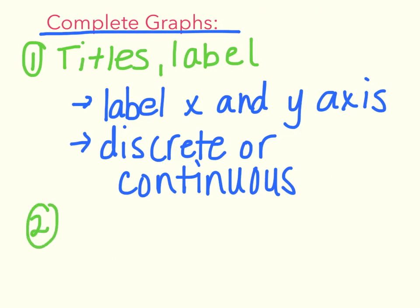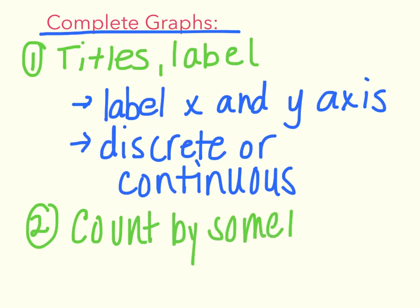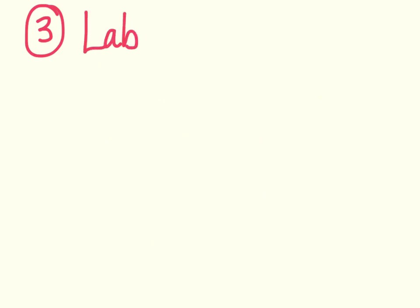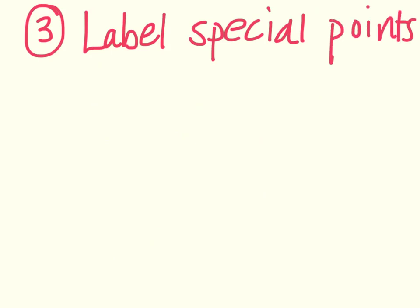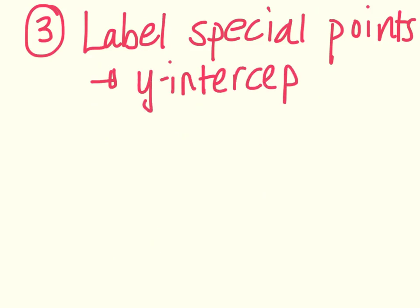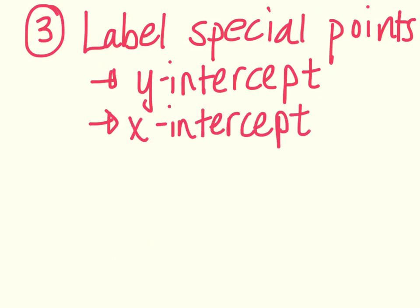Second, you need to make sure you count by something and label it on your graph. Whether you're counting by ones, twos, or tens, please make sure you label that. Next, label special points on your line. Those special points include the y-intercept and the x-intercept. For any special points, you should label the coordinates of those.